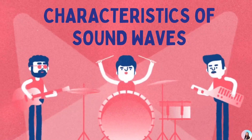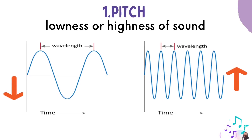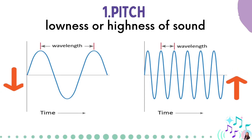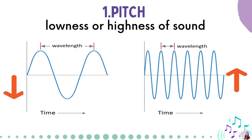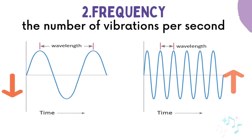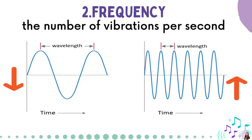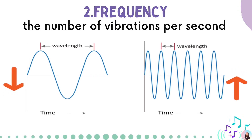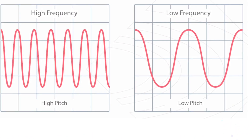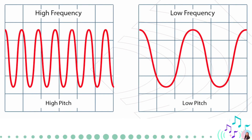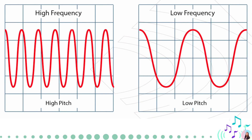Let us now proceed with the characteristics of sound waves. Pitch is the highness or lowness of sound. It depends on the number of vibrations per second, which is called the frequency of sound. The higher the frequency of a vibrating object, the higher the pitch of a sound emitted; the lower the frequency, the lower the pitch.